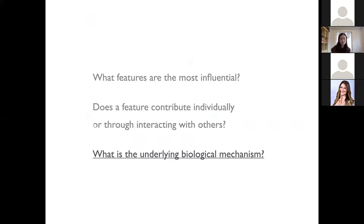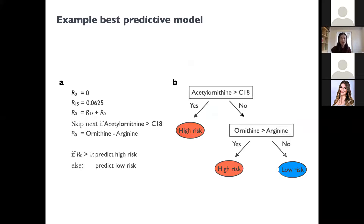The last question is: what is the underlying biological mechanism? Can we have a more compact predictive model that we can interpret? The answer is yes. We found a really compact, short genetic program that we can convert to a decision tree. It boils down to the comparison of two pairs of metabolites, which is something really useful for generating hypotheses to better understand this disease. The accuracy of this predictive model is actually 97%.